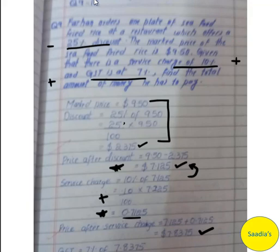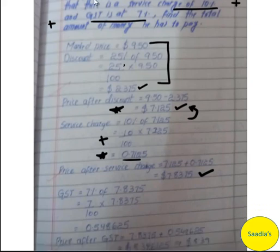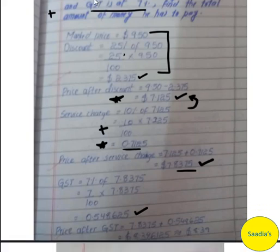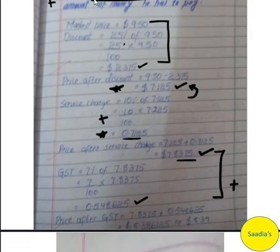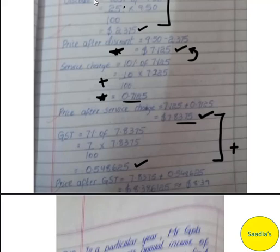Finally, apply GST of 7% on $7.875: 7 over 100 multiplied by $7.875, giving the GST amount. Adding this GST to $7.875, the final total comes to $8.39 rounded off. This is the total price after discount, service charge, and GST.